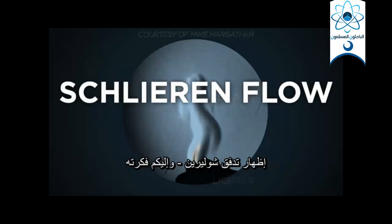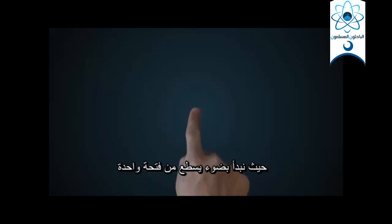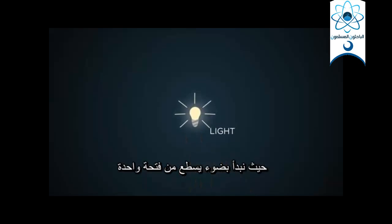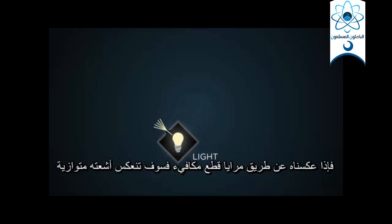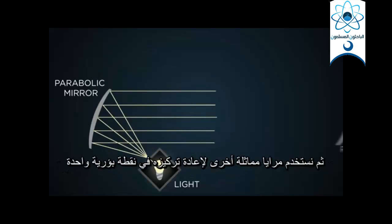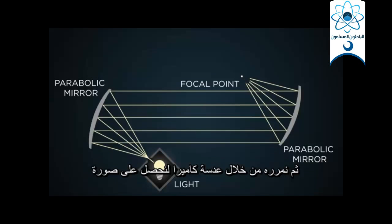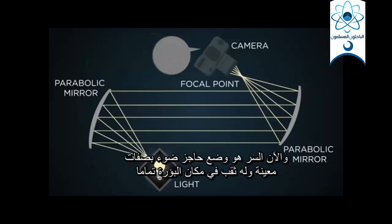We're able to see the density change thanks to a technique called Schlieren flow visualization. Here's how it works: you start off with a light shining through a single slit. If you reflect that light off a parabolic mirror, all the rays become parallel. Then you can use another parabolic mirror to refocus the light down to a single focal point, and then in through the lens of a camera to make a picture.